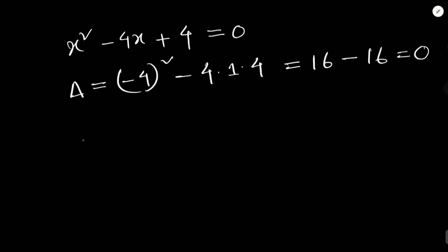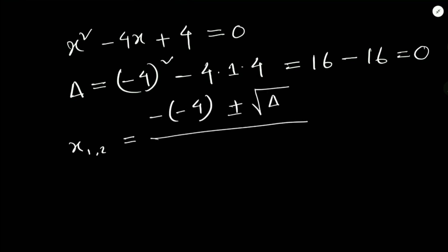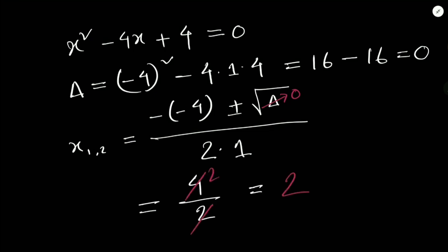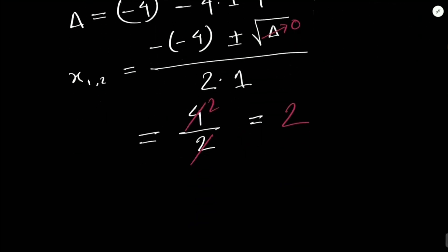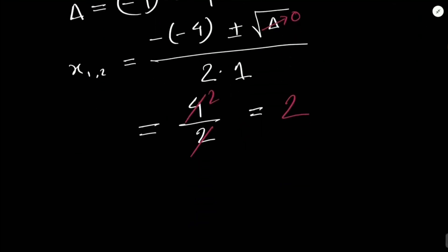With Δ = 0, the solution is x1,2 = (-b ± √0) / 2a = 4 / 2 = 2. So when the discriminant is zero, the quadratic equation gives only one solution — in this case, x = 2.